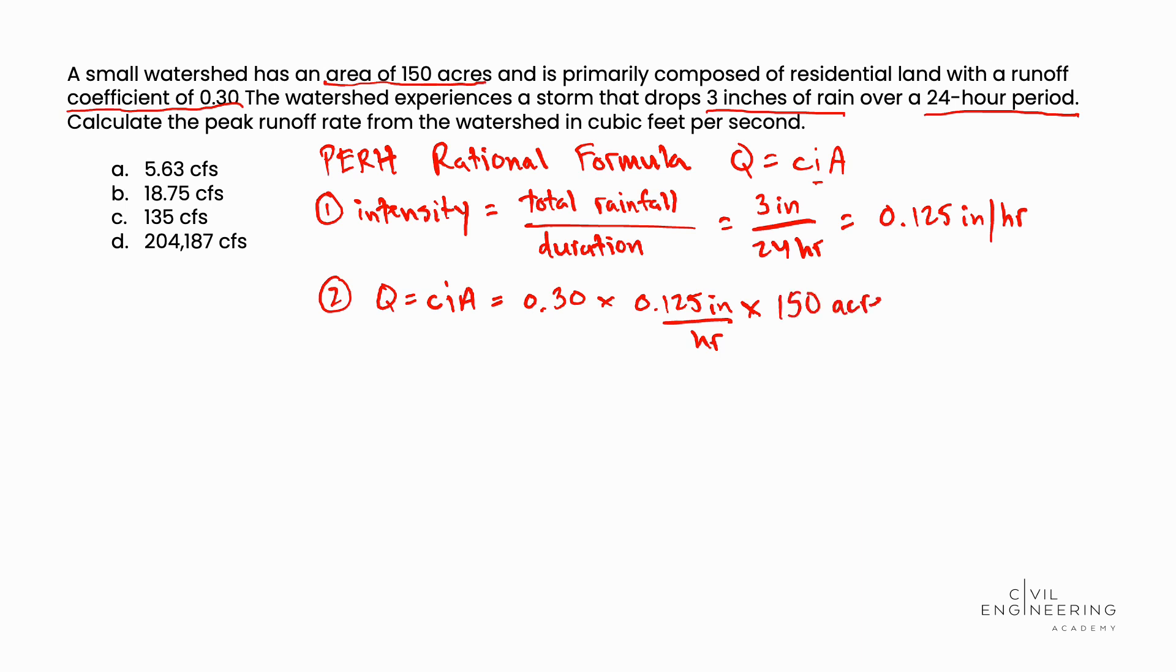All those units are consistent with our formula. We perform this calculation and determine that Q, the runoff rate, is equal to 5.625 cubic feet per second. That's consistent with the units we're asked to give in the problem statement. We look at our answer choices and realize that is closest to answer choice A.